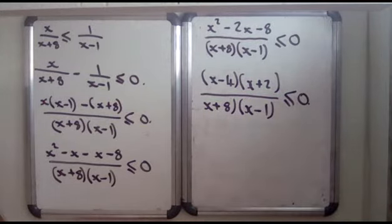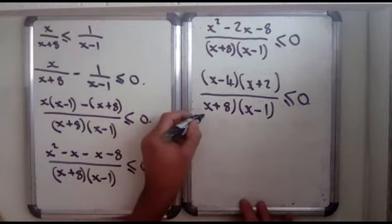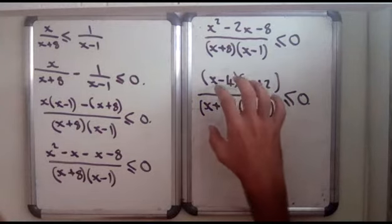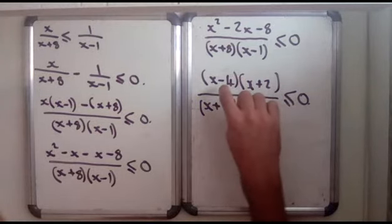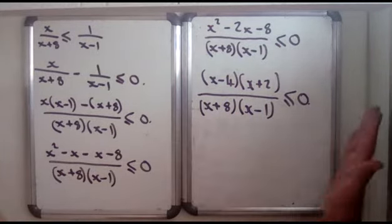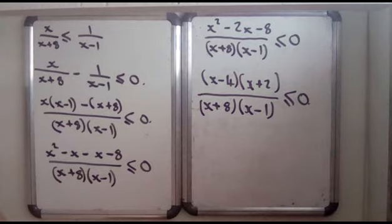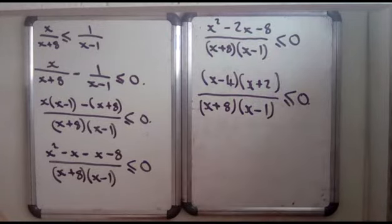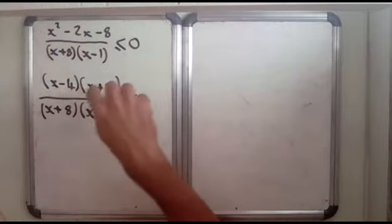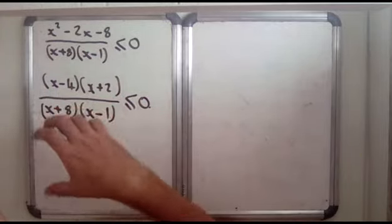Now what you can do — because this function is made up of something times something, divided by something else times something else — if you can work out the key values, we can get a sign diagram. If you know the signs of each individual factor, we should be able to get a sign diagram for the whole thing to say where it is less than or equal to 0. The way we're going to construct this sign diagram is to construct a sign diagram for all of these individually, and then bring them all together.